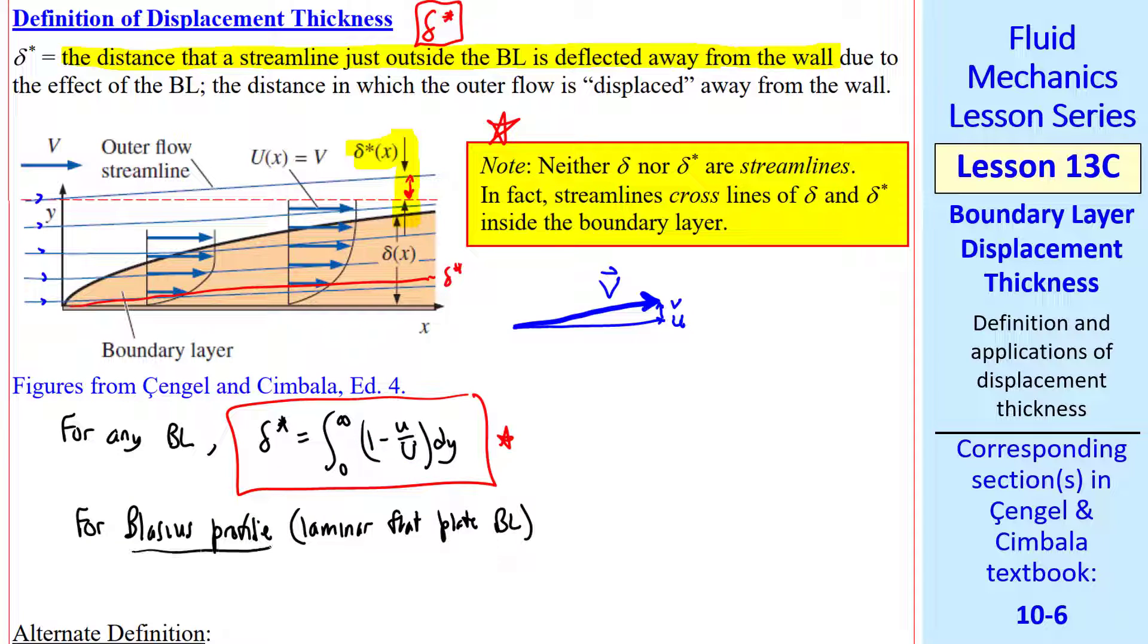For the Blasius profile, laminar flat plate, we write delta star over x non-dimensionally as 1.72 over the square root of Rex. Notice that this equation is of the same form as delta, but with a different constant, in fact a smaller constant, since delta star is smaller than delta at a given x.